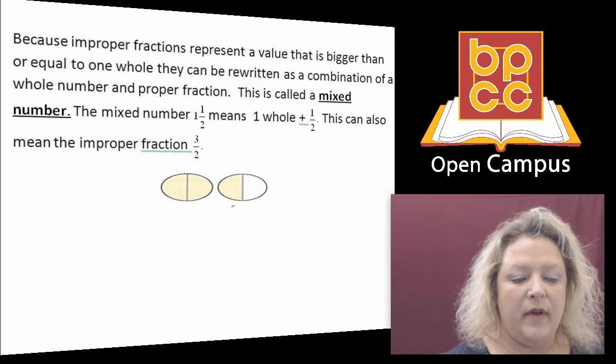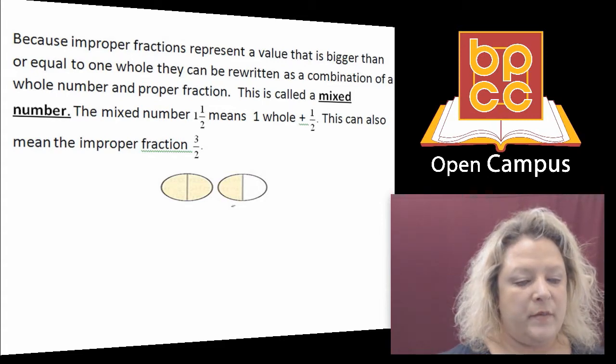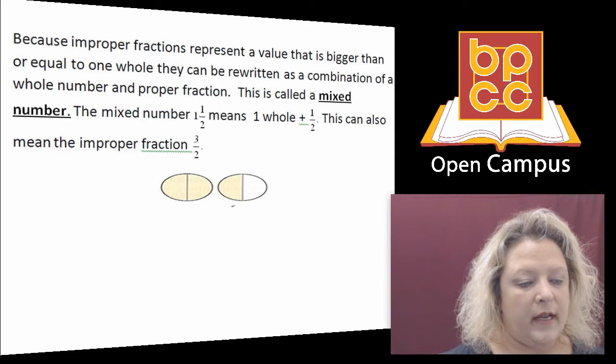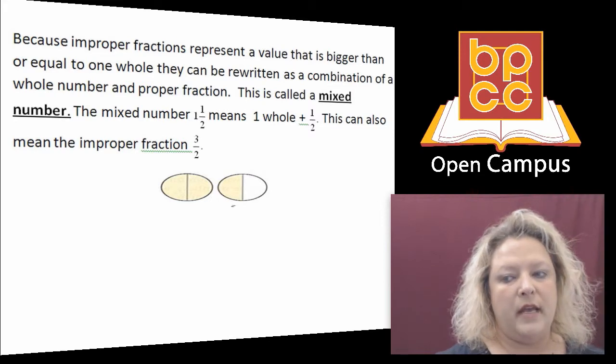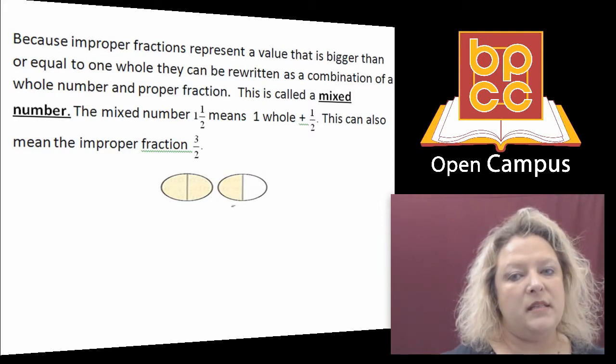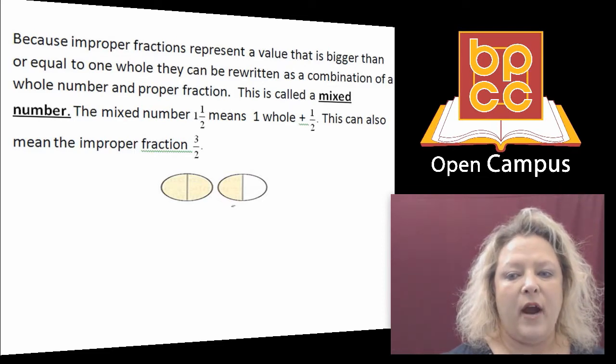Sometimes we have improper fractions, which we talked about in the previous module. And improper fractions means that the bottom number is smaller or equal to the top number, which is our numerator. So there's a different way that we can write the fractions, and we use mixed numbers. Mixed meaning it's a combination of a whole number and a fraction.